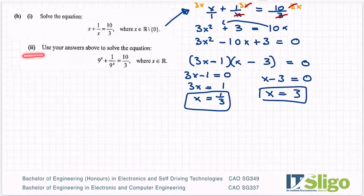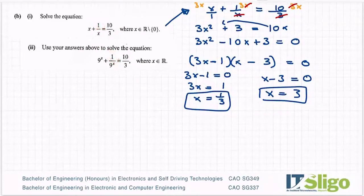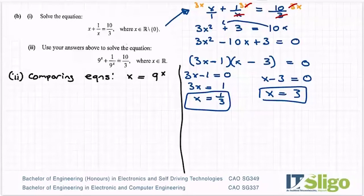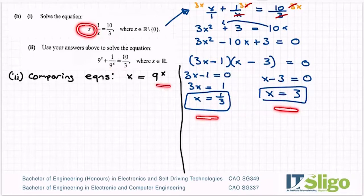Part two said: use your answers to solve this equation here. Comparing the two equations, I can see 10/3 in both, so the equations must be related. I can see that x must have the same value as 9^x. So I'm going to use my two answers — x = 1/3 and x = 3 — to help me solve 9^x. When x = 1/3, I get 1/3 = 9^x.